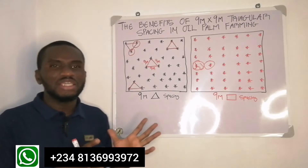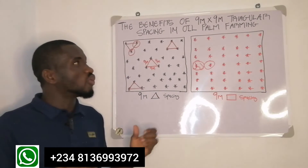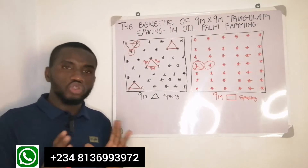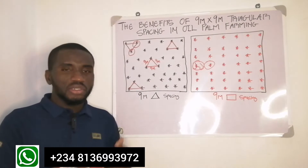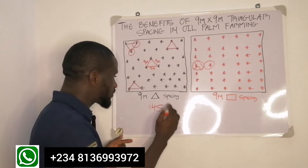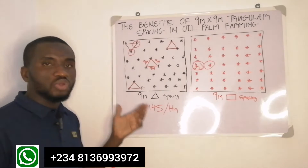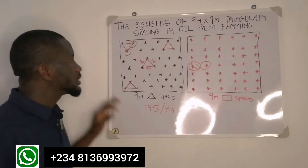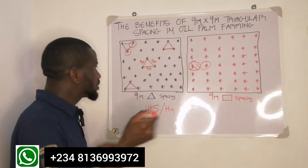Today I'm going to take you on a trip and we are going to look at the benefits of following the nine-meter by nine-meter triangular spacing. The problem with so many people is that they want to cut corners — many will tell you nine meter by nine meter triangular is too wide. If you use nine-meter by nine-meter triangular spacing, you'll be having just 145 trees per hectare. But some people want more population per hectare — that is your choice, but you will not be getting the best results.